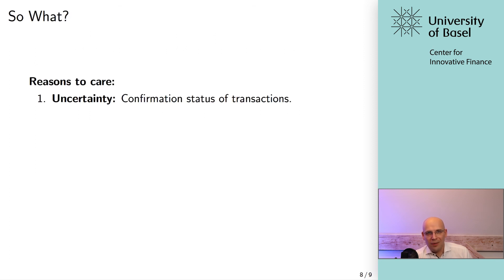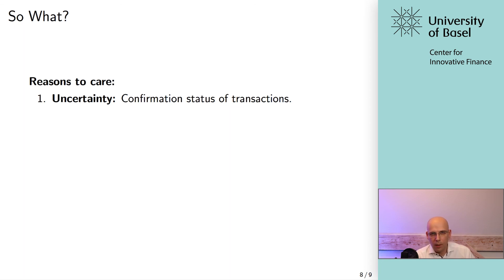So why do we care? Number one is uncertainty. Economically speaking, it's pretty bad when you don't know about the confirmation status of your transaction — whether a confirmation on one branch is actually the most recent version or will be disregarded by others. Uncertainty is not good for an economic system.